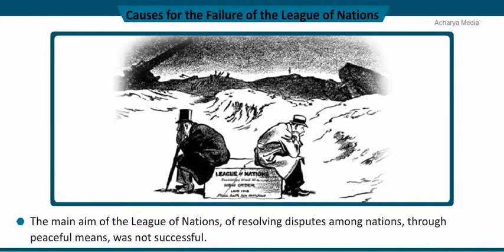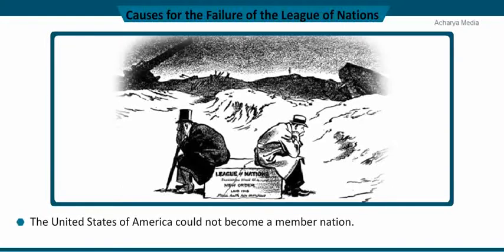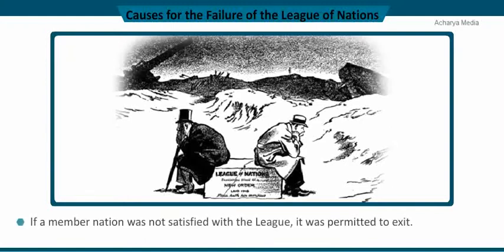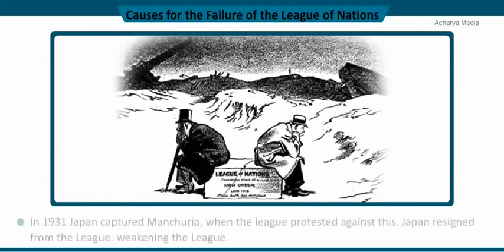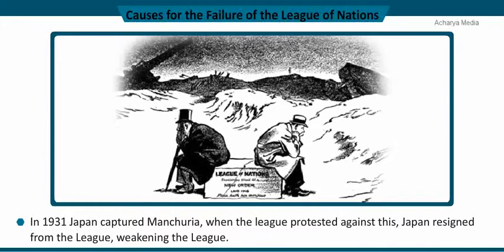The main aim of the League of Nations — resolving disputes among nations through peaceful means — was not successful. The United States of America, whose president was responsible for founding the League, could not become a member, so the League lacked a good foundation. If a member nation was not satisfied with the League, it was permitted to exit. In 1931, Japan captured Manchuria, renamed it Manchukuo, and made it a puppet state. When the League protested, Japan resigned from the League, which weakened it further.